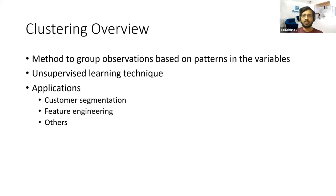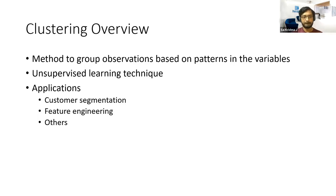When training other machine learning models, like a random forest, clustering can be used to generate features. For example, if you're predicting the shopping cart value of a customer, one of the features could be which cluster the customer belongs to. Adding this kind of cluster as a feature could possibly help increase the accuracy of your model. This is how clustering is used for feature engineering.